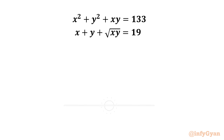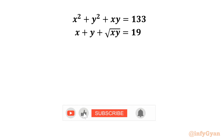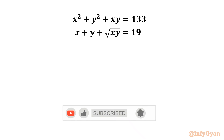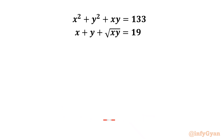Welcome to Infigyan friends. Today in this video we have one very interesting question from algebra. We have to find real values of x and y, given that x squared plus y squared plus xy equals 133, and x plus y plus square root of xy equals 19.